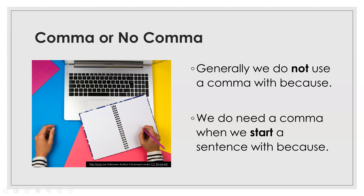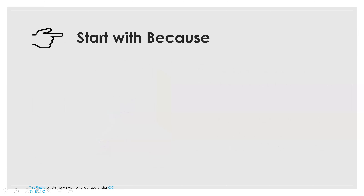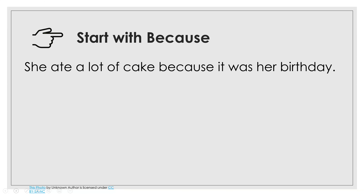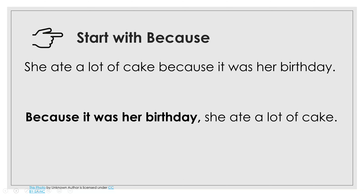But we do need a comma when we start a sentence with 'because' — that means 'because' is the first word. For example: 'She ate a lot of cake because it was her birthday' is the traditional form. The different style: 'Because it was her birthday, she ate a lot of cake.' Since we start with 'because,' we need a comma after that clause.